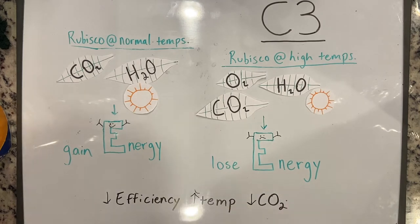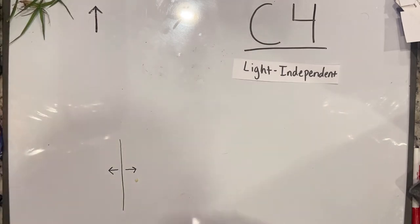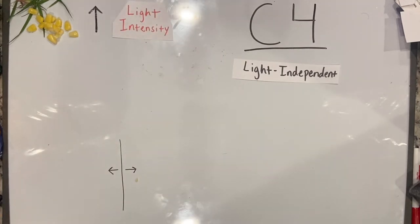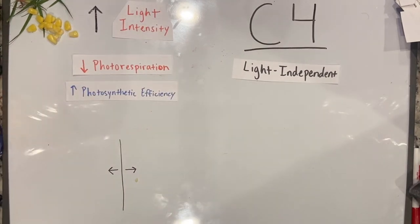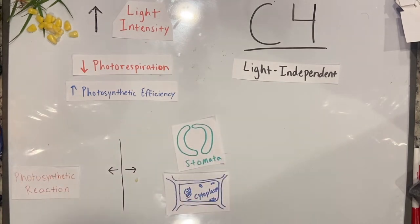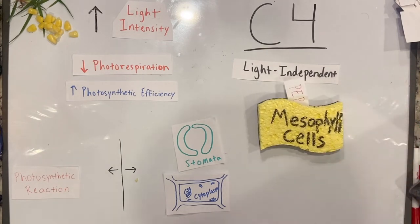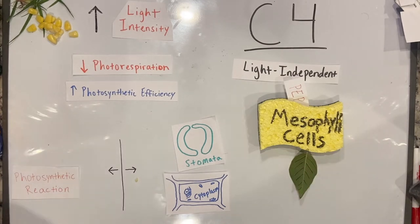C4 photosynthesis solves this by separating the fixation in space to eliminate this loss of energy. C4 plants are most commonly agricultural plants and grass species, such as corn and sugarcane, and are found in areas where light intensity is high. These plants undergo C4 photosynthesis because it reduces photorespiration and increases photosynthetic efficiency by separating the photosynthetic reaction from the stomates and cytoplasm. More specifically, the light-independent reactions occur in the spongy tissue of the leaf called the mesophyll cells, and the Calvin cycle and the rest of photosynthesis occurs around the leaf veins called the bundle sheath cells.